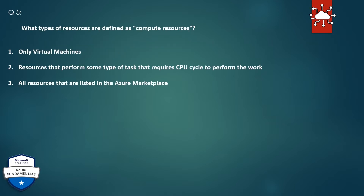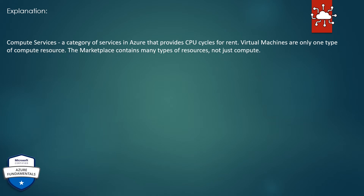Question 5. What types of resources are defined as compute resources? 1. Only virtual machines. 2. Resources that perform some type of task that requires CPU cycles to perform the work. 3. All resources that are listed in the Azure marketplace. The correct answer is: resources that perform some type of task that requires CPU cycles to perform the work. Explanation: Compute services are a category of services in Azure that provides CPU cycles for rent. Virtual machines are only one type of compute resource; the marketplace contains many types of resources, not just compute.